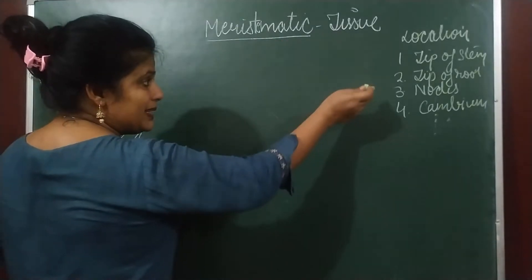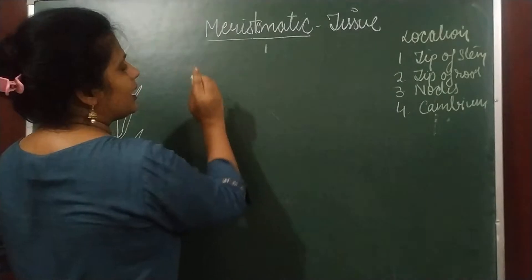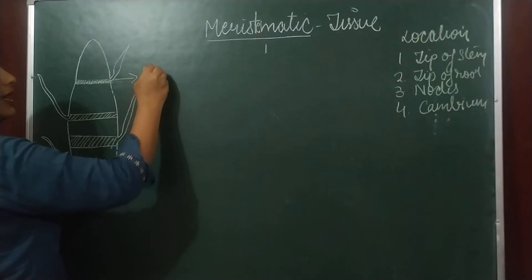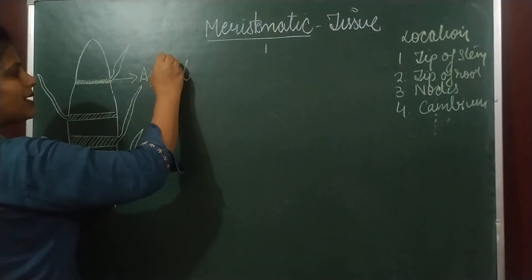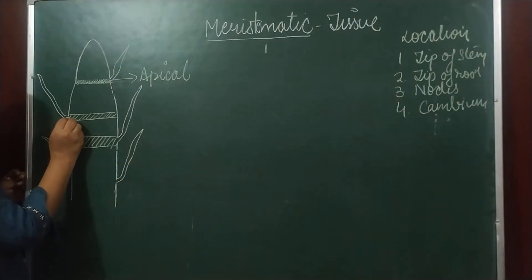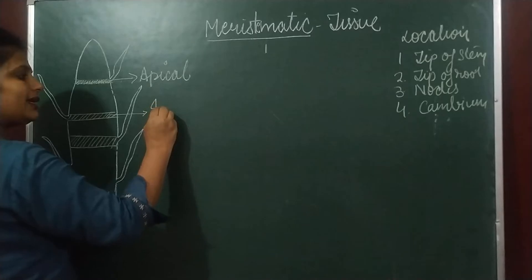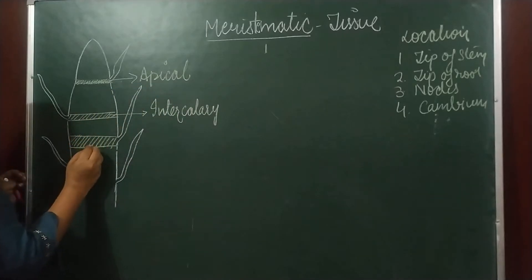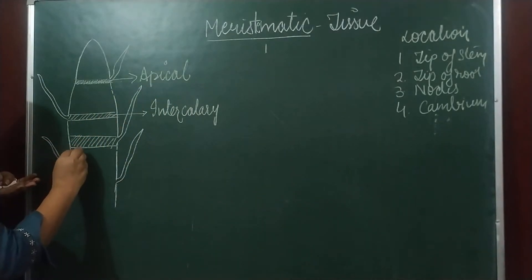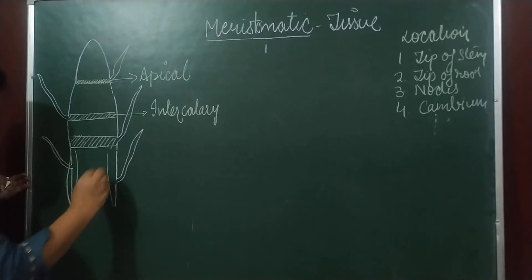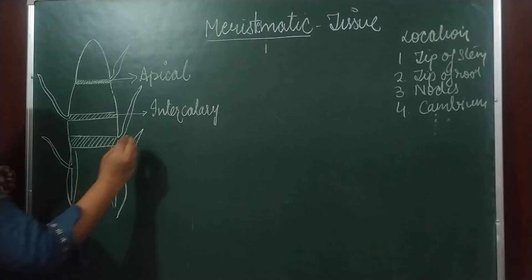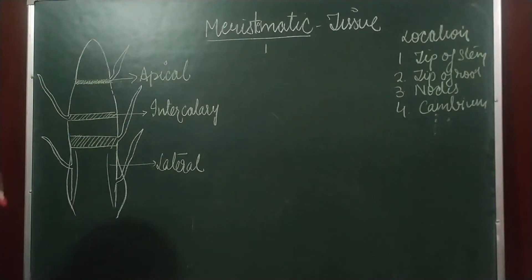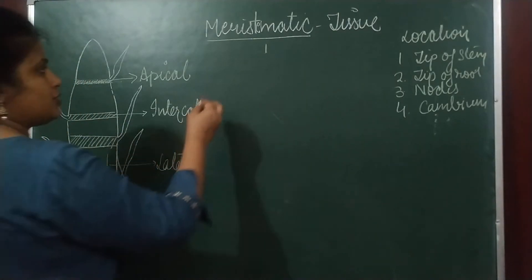On the basis of location, we have three kinds of meristematic tissue. First is apical meristematic tissue. The tissue which is present on the nodes is called intercalary meristematic tissue. And the third type, which increases the girth — responsible for increasing the thickness — is called lateral meristematic tissue.